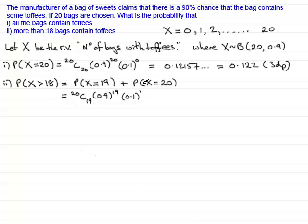Then we've got plus the probability at X equals 20 and we could either use the formula again or we could just simply use the answer we had previously 0.12157 and so on. And if we add these two values together, what you should find is that you get 0.39174 and so on, which is the same as 0.392 to 3 decimal places.